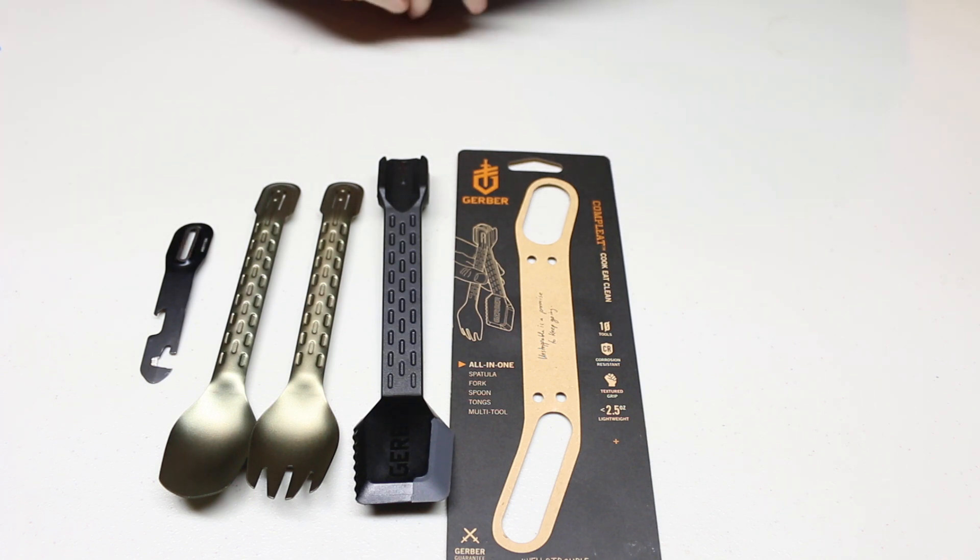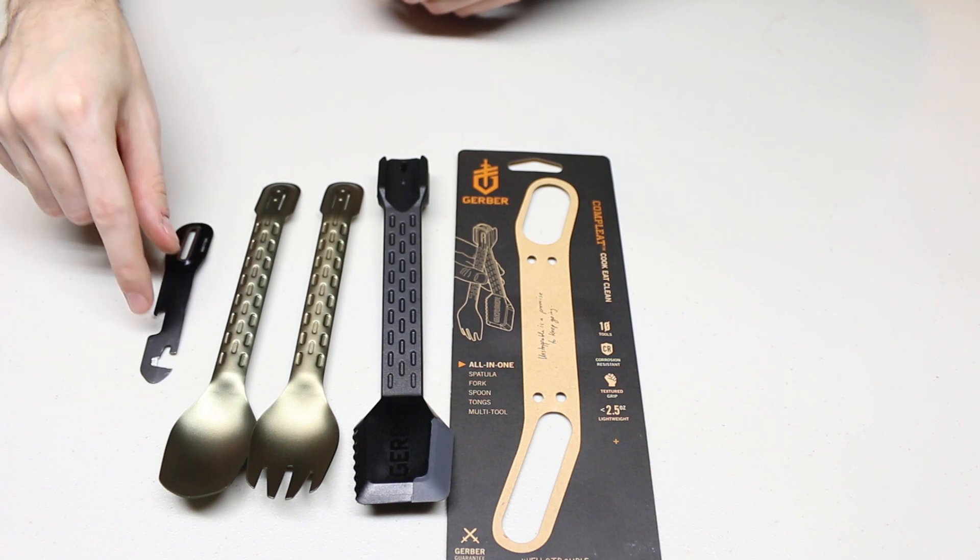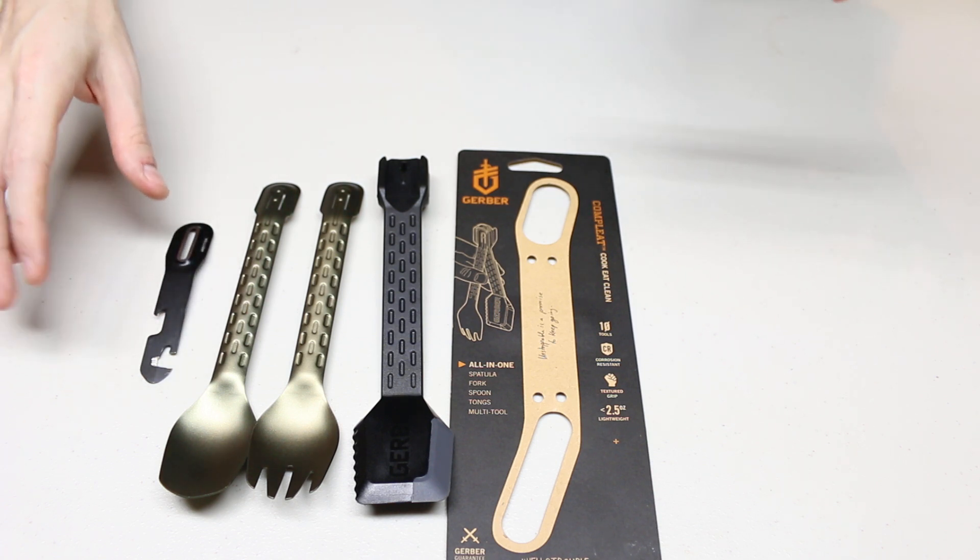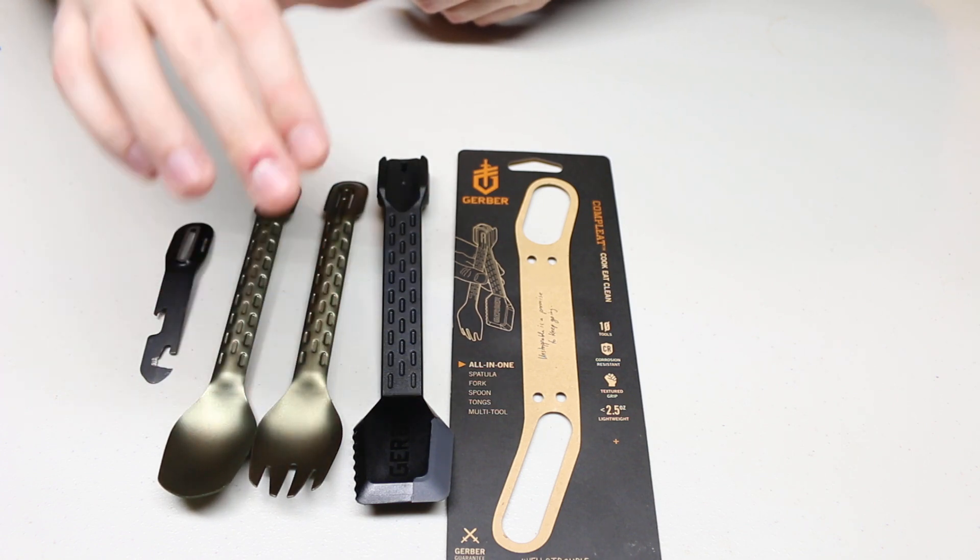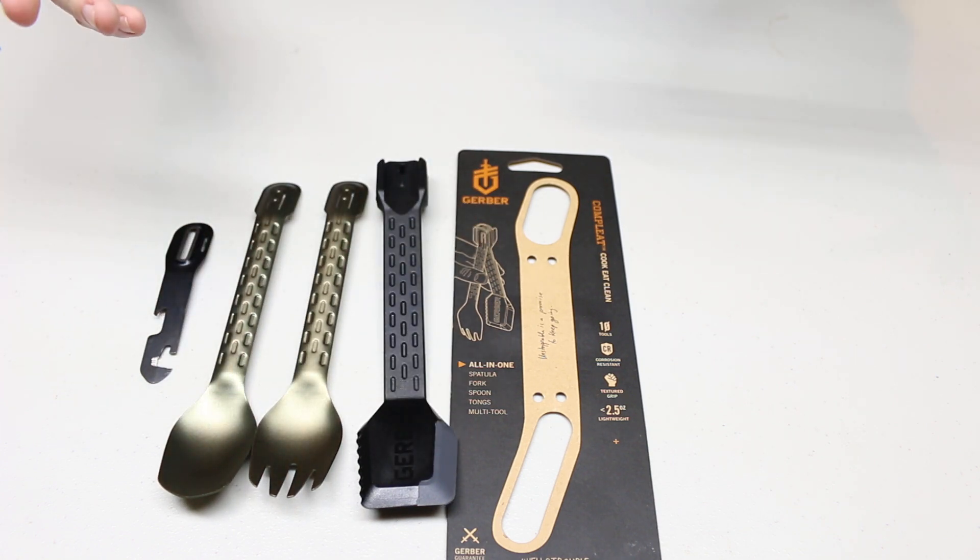So what you get here is a peeler, can bottle opener as well as I think kind of a flathead screwdriver, a spoon, a fork, a spatula, as well as a set of tongs.